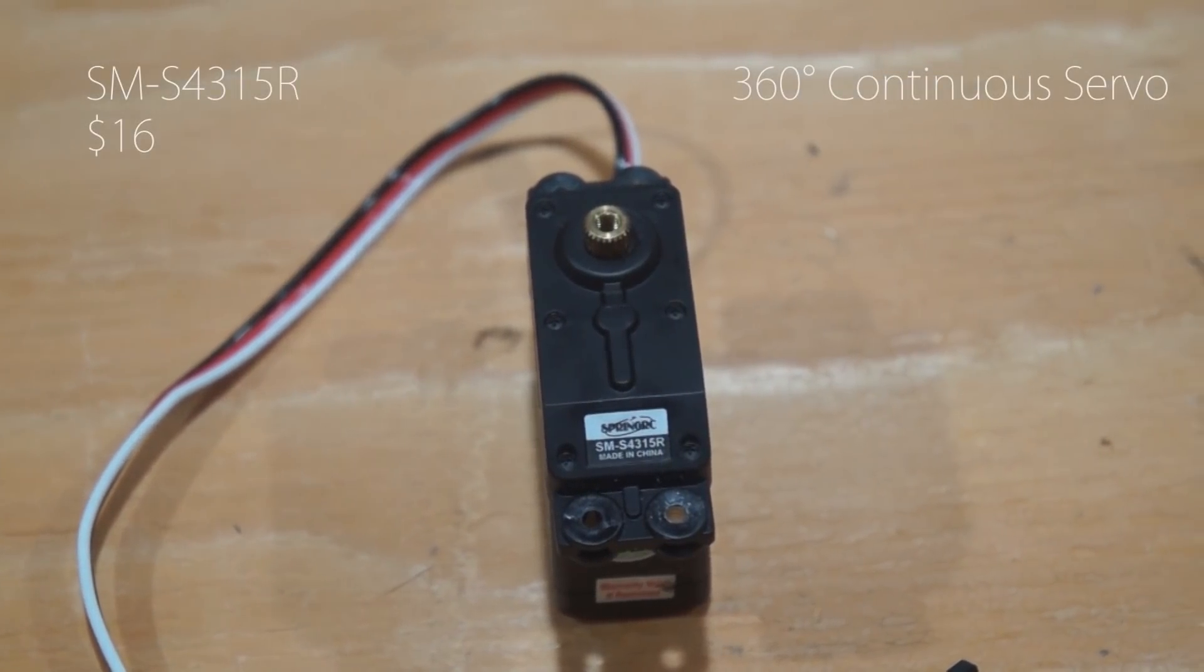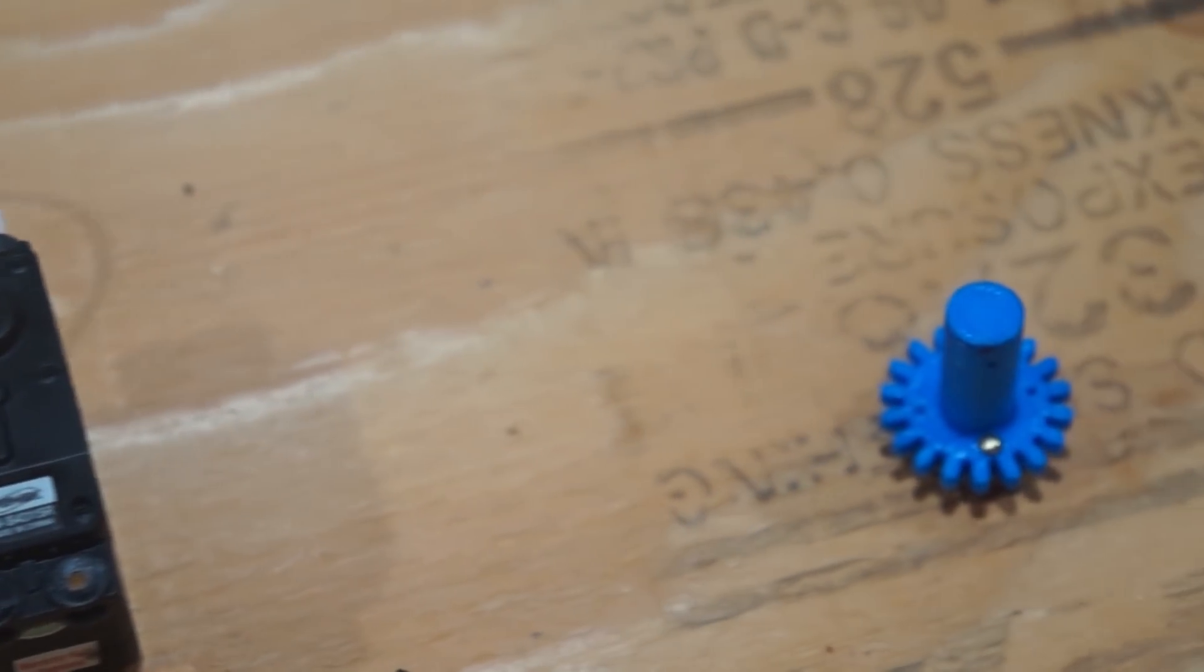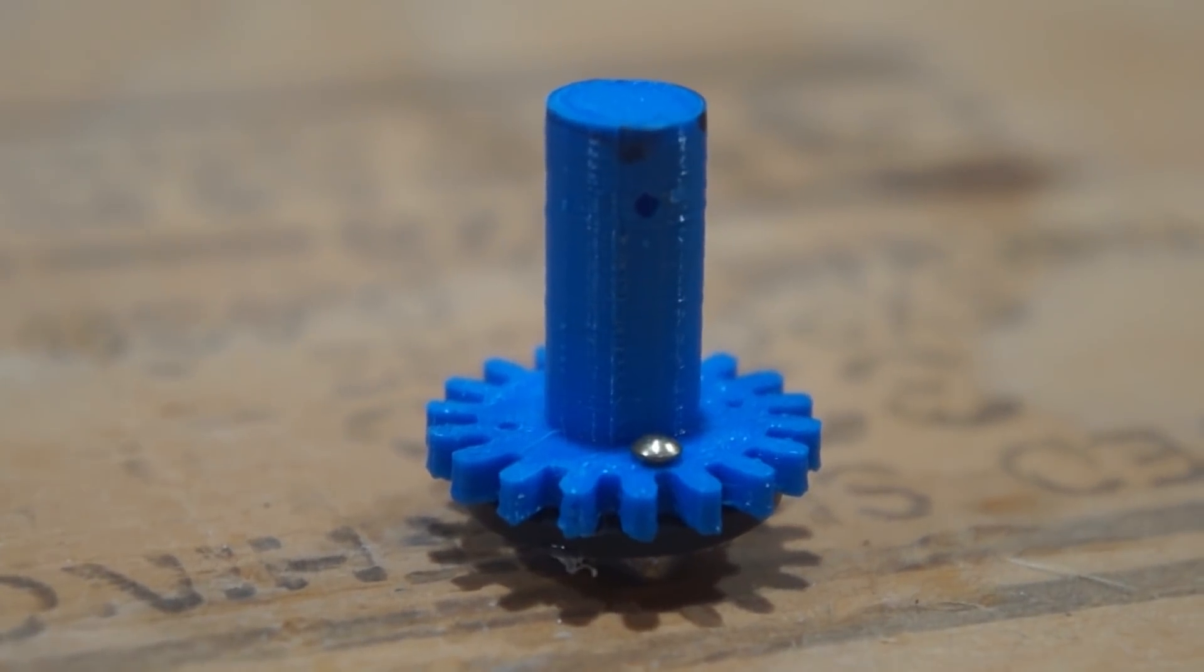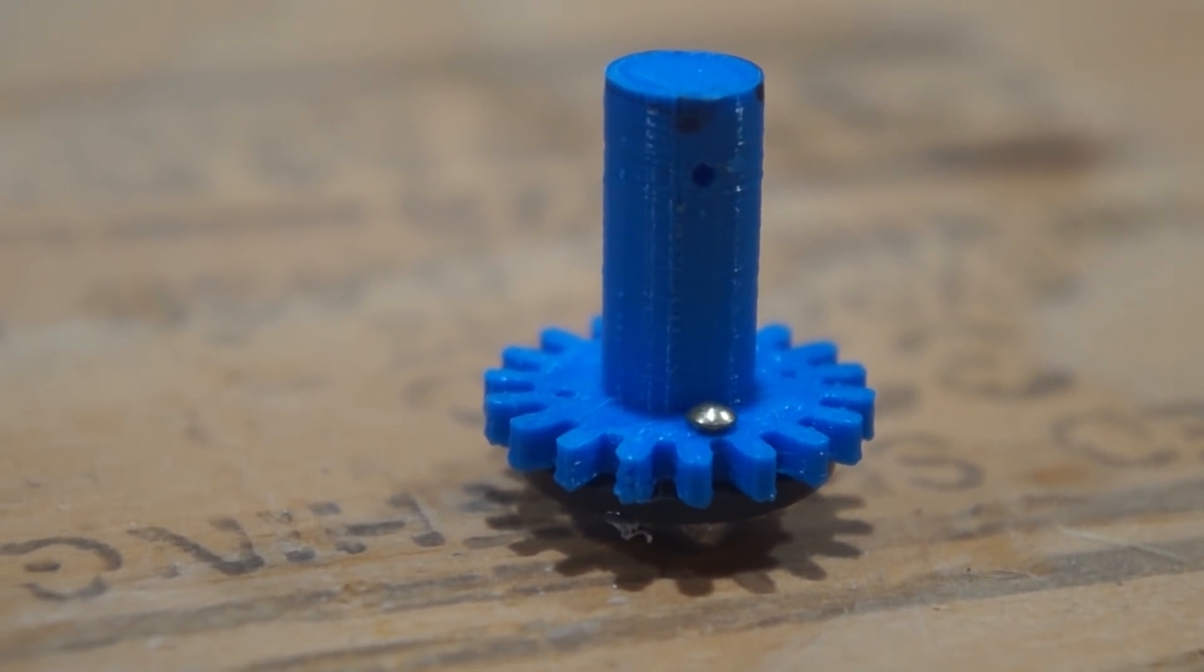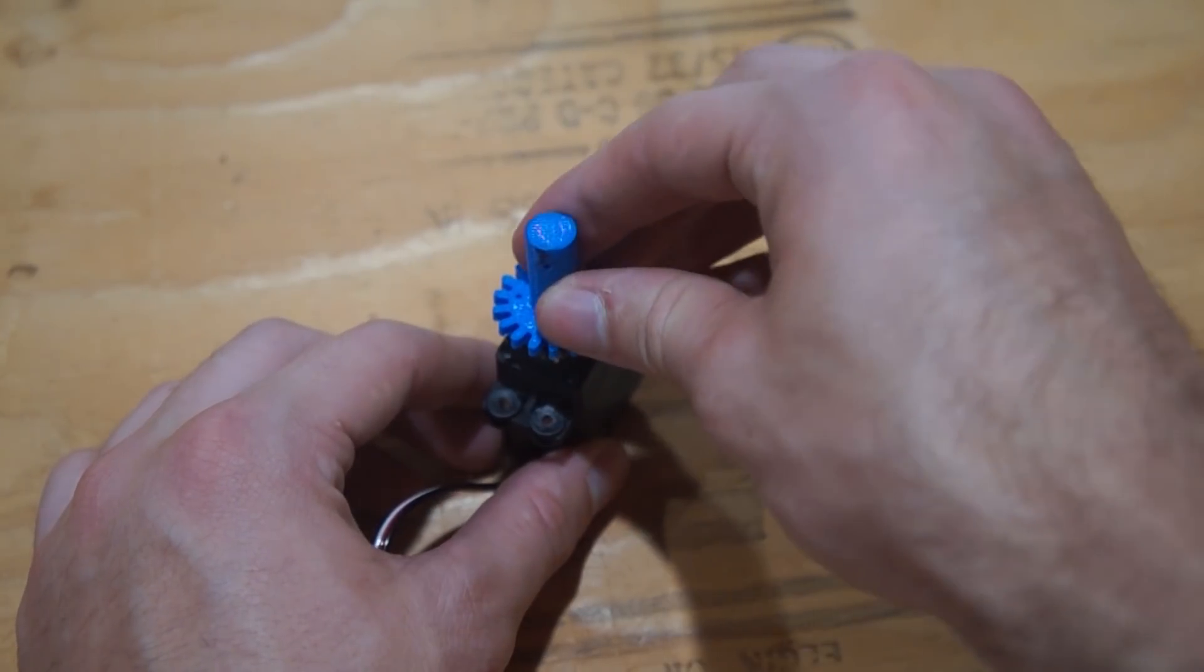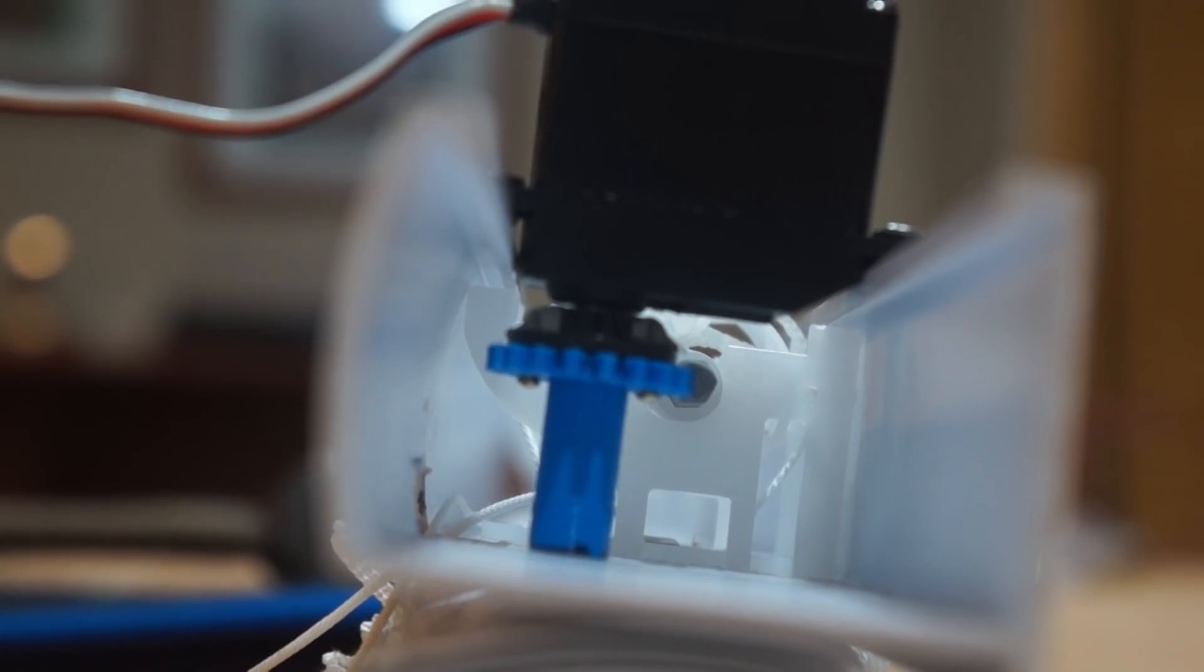Here is the high torque 360 degree continuous servo. This will be used to pull the string up. And here is a 3D printed part that has a gear with a cylinder, a thread hole to attach the strings, and the cylinder will spool up the wire while the gear will turn a feedback system.